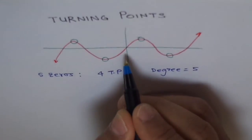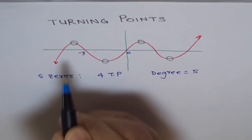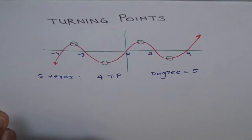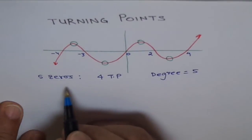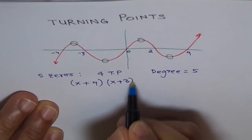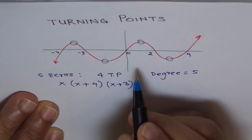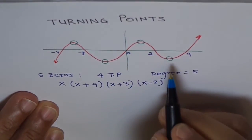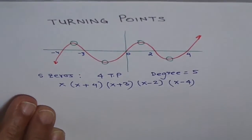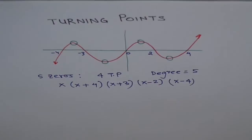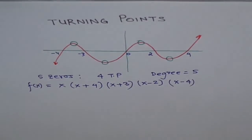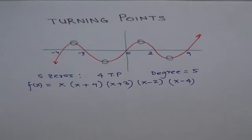Let's say this point is 0, this point is minus 3, and this point is minus 4. And let's take this point as 2 and this is 4. So what is the possible equation? The possible equation, looking at the zeros, is (x+4)(x+3)(x)(x−2)(x−4) — that's 5 factors, each leading to a zero shown in the graph. So f(x) is equal to this. This is another way of writing the equation of a polynomial from a given graph.